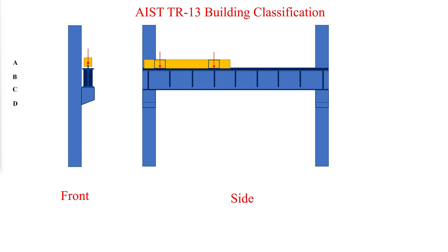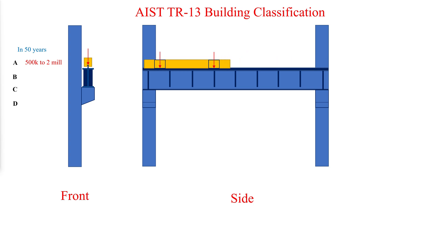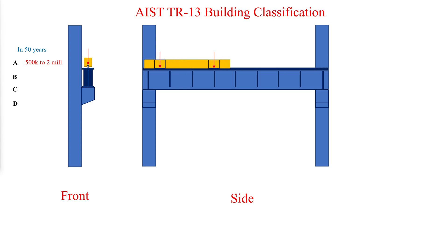Class A is a building in which members may experience either 500,000 to 2 million repetitions, or over 2 million repetitions in the estimated lifespan of the building of approximately 50 years. The owner must analyze the service and determine which load condition may apply.